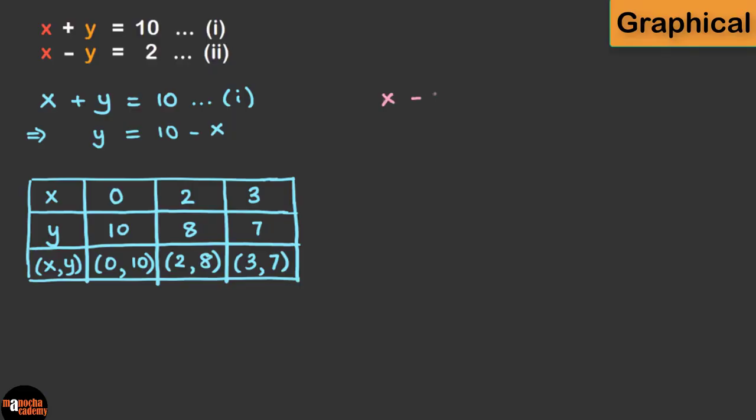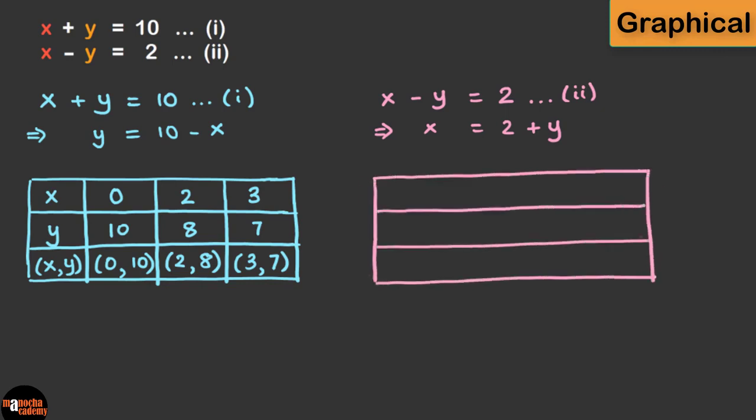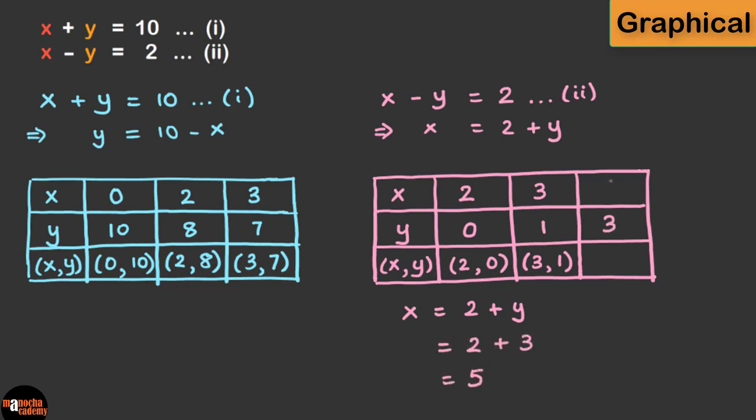Now let's take the second equation. Here it will be better to write it in terms of x. So we have x equal to 2 plus y. So let's make our table again. This time we'll take values of y and solve for x. So for our first point, let's take y equal to 0. And on solving, we get x as 2. So the point x, y becomes 2, 0. Similarly, taking y as 1, we get our next point 3, 1. And taking y as 3, we get our third point 5, 3.